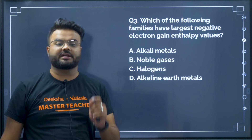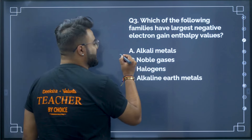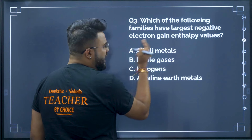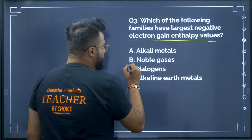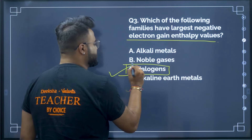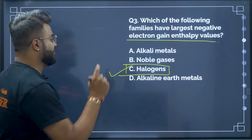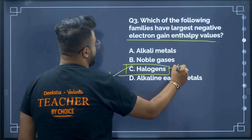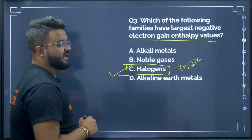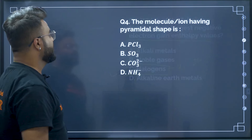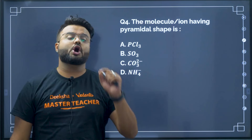Question 3: Which family has the largest negative electron gain enthalpy values? Alkali metals do not, noble gases do not, alkaline earth metals do not. Only group 17 — the halogens — has the largest negative electron gain enthalpy values. Therefore it is group 17. Very simple, it is a conceptual direct question.